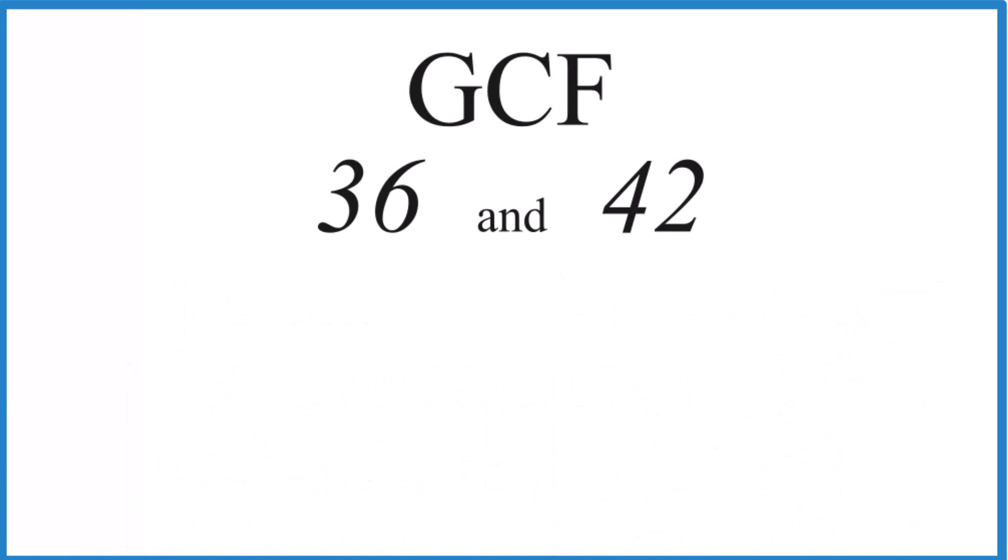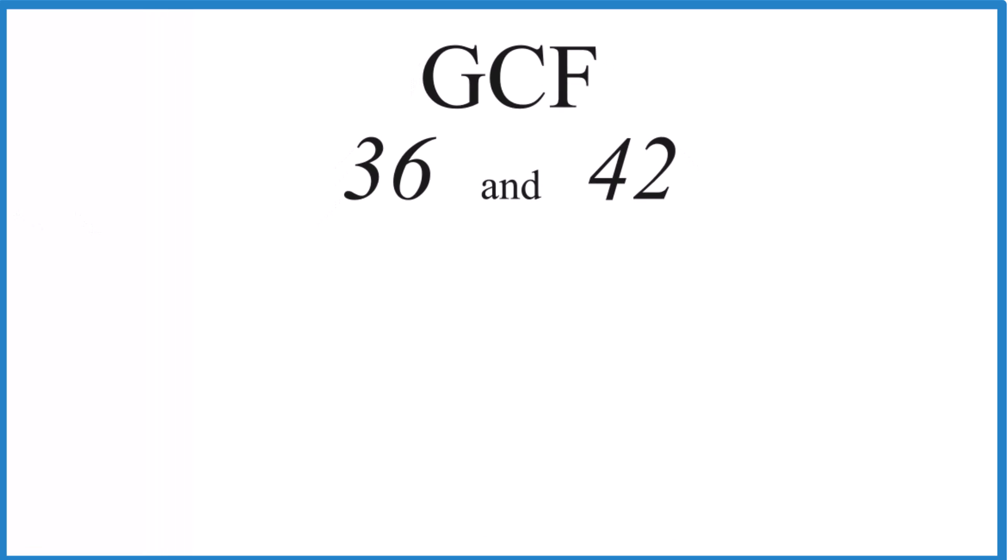So for the greatest common factor, we find the factors for 36 and 42, look at the ones common between them, and then just choose the greatest one, and that's the GCF. So for 36, these are the factors.